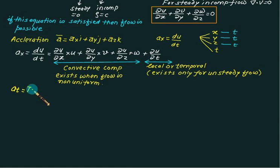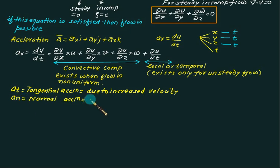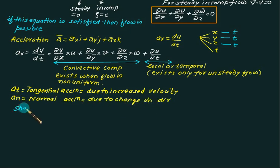There are two types of acceleration: tangential acceleration, which is due to an increase in the magnitude of velocity, and normal acceleration, which is due to a change in the direction of velocity.